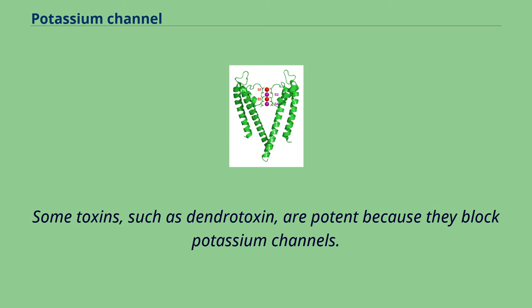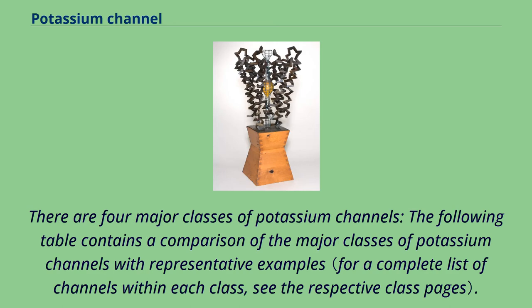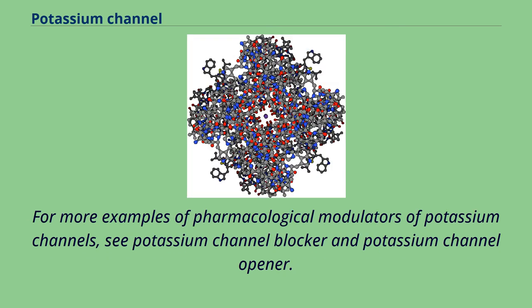Some toxins, such as dendrotoxin, are potent because they block potassium channels. There are four major classes of potassium channels. A comparison of these major classes with representative examples is available, and for more examples of pharmacological modulators, see potassium channel blocker and potassium channel opener.